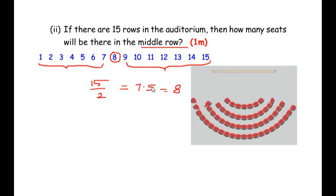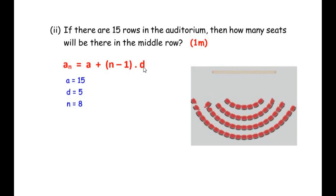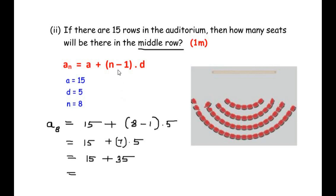Since the middle row is n = 8, we use the nth term formula again: a_n = a + (n − 1) × d. Here a = 15 (from part 1), d = 5, and n = 8. Substituting: a_8 = 15 + (8 − 1) × 5 = 15 + 7 × 5 = 15 + 35 = 50. So the total number of seats in the middle row is 50. Let us move on to the third sub-question.